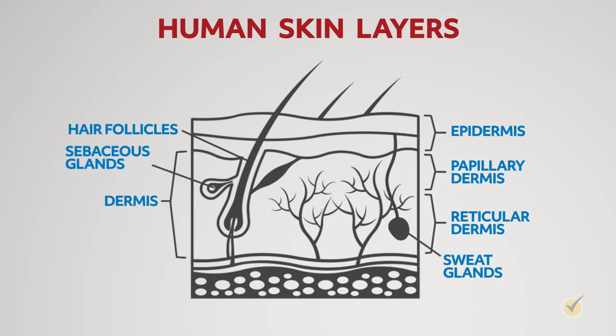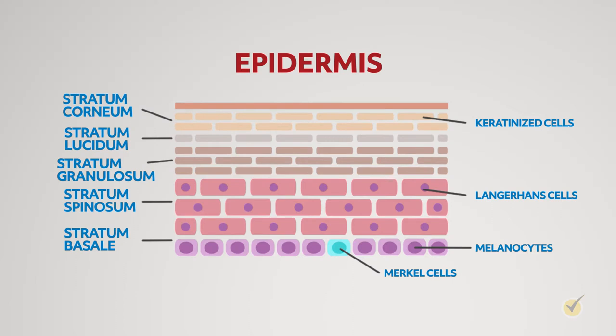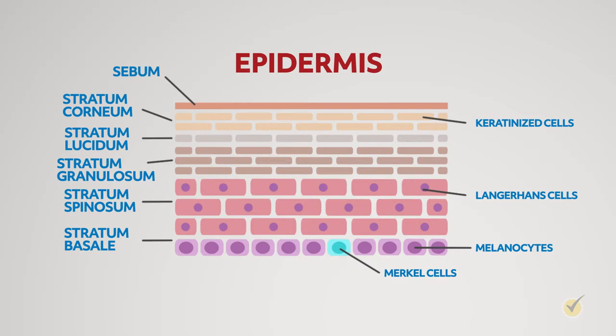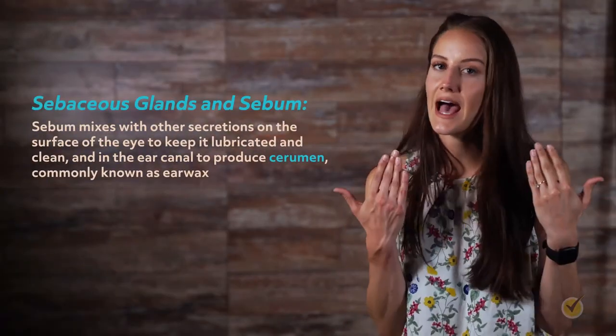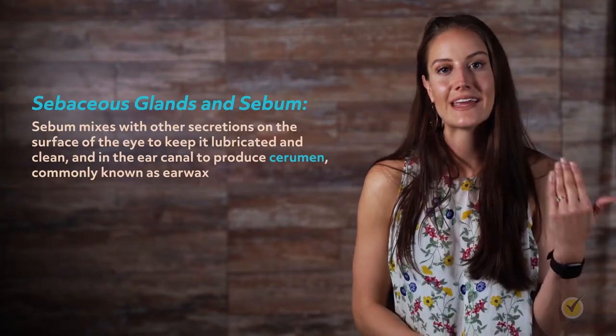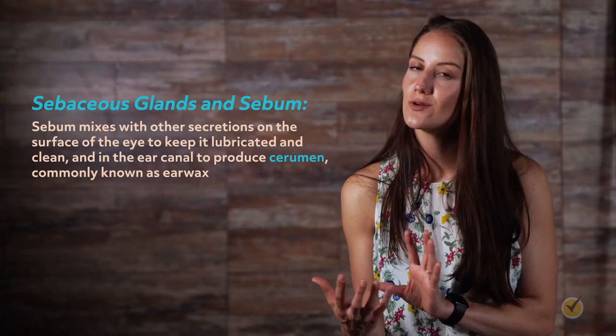Both sebaceous and sweat glands are exocrine glands, meaning they secrete products to the outside of the body. Sebaceous glands are groups of cells that produce an oily substance known as sebum, which is thought to lubricate the hair and contribute to water resistance of the skin. Most sebaceous glands empty into a hair follicle, which leads to the surface of the skin. Sebaceous glands are present in the dermis all over the body except the palms and soles. Varieties of sebaceous glands and sebum serve specialized functions in different locations, such as mixing with secretions on the eye's surface to keep it lubricated and clean, and in the ear canal to produce cerumen, commonly known as earwax.